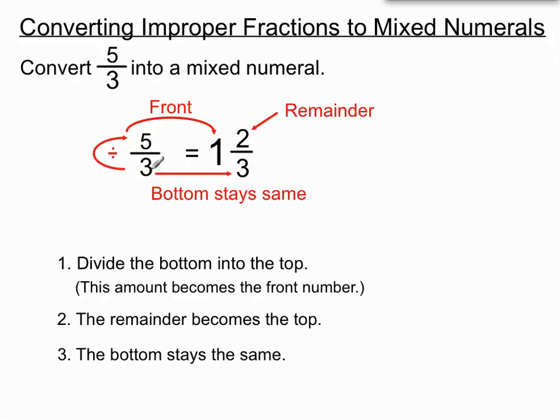So quite a lot's happened there. 3 went into 5 once and that created the front number. Then our remainder, when 3 went into 5 there was a remainder of 2, it became the top number and the bottom stayed the same. So 5 thirds, 5 over 3, became 1 and 2 thirds when it was converted to be a mixed numeral. Let's look at another example.